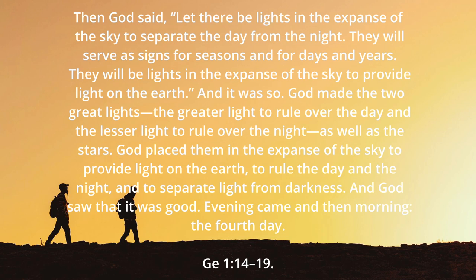Day One had the separation of light and dark. So on Day Four, verse 14: 'Then God said, let there be lights in the expanse of the sky to separate the day and the night. They will serve as signs for seasons and for days and for years.' God made two great lights — the greater light to rule the day and the lesser light to rule the night — as well as the stars. God placed them in the sky to provide light on the earth, and God saw that it was good.